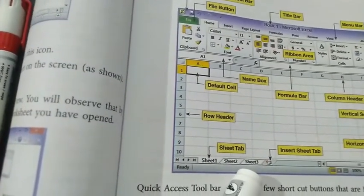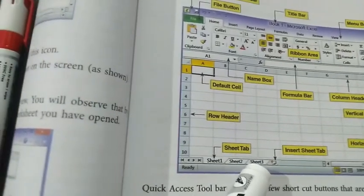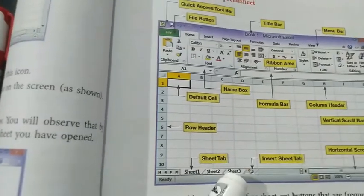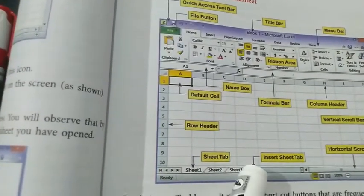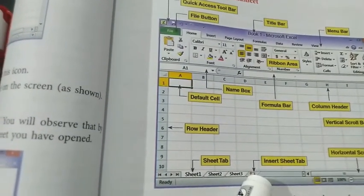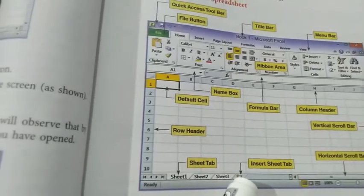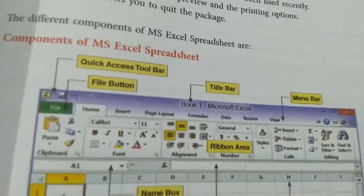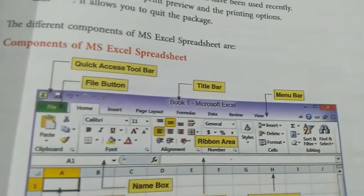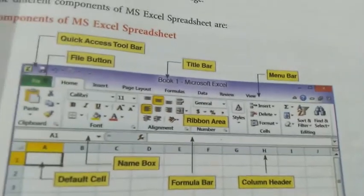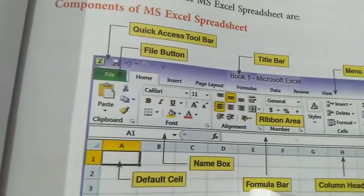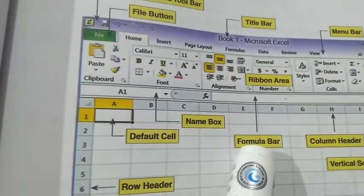The sheets are named by default as Sheet 1, Sheet 2, Sheet 3, but according to our choice we can change the name. This is known as Insert Tab, where I can add extra sheets of my choice. The total area where you see all these icons is known as the Ribbon Area. Then we have the Formula Bar, where you can type different types of formulas.